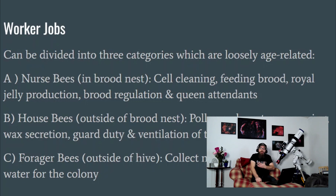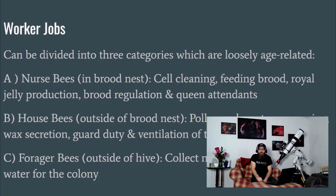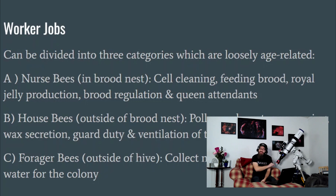After that she'll graduate to house bee, which is pretty much everything else inside the colony that doesn't involve the brood — including guarding the entrance, gathering nectar and pollen from foragers and putting it where it needs to go, ventilating the hive, concentrating nectar into honey, and wax secretion. There's a specific age where bees produce wax, which is one interesting reason why reproductive swarms are so great for producing wax — they have a large proportion of that particular aged bees.